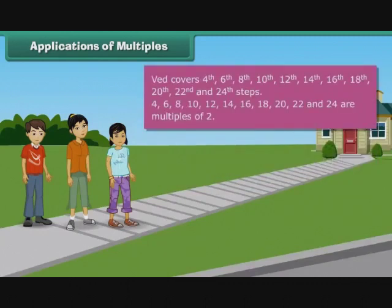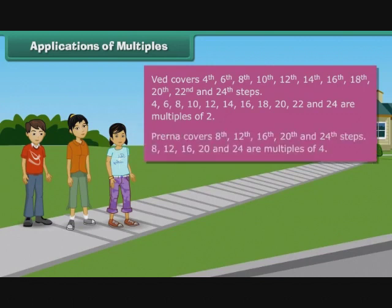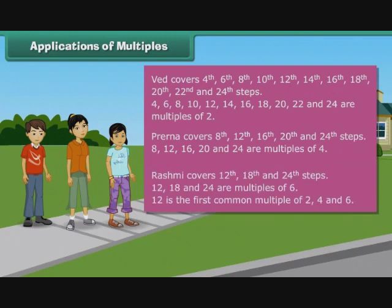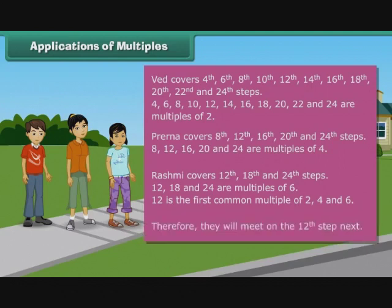Ved covers the 4th, 6th, 8th, 10th, 12th, 14th, 16th, 18th, 20th, 22nd and 24th steps — these are multiples of 2. Prerina covers the 8th, 12th, 16th, 20th and 24th steps — these are multiples of 4. Rashmi covers the 12th, 18th and 24th steps — these are multiples of 6. The 12th step is the first common multiple of 2, 4 and 6. Therefore, they will meet on the 12th step.